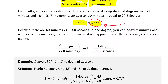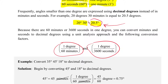Converting back and forth from DMS to decimal degrees is our first task. To do that, we use conversion factors — ratios that you multiply by so that unwanted units cancel. For example, the conversion factor of 1 degree to 60 minutes, with 60 minutes in the denominator, lets you multiply to get rid of minutes. We're going to do some examples like that right now.